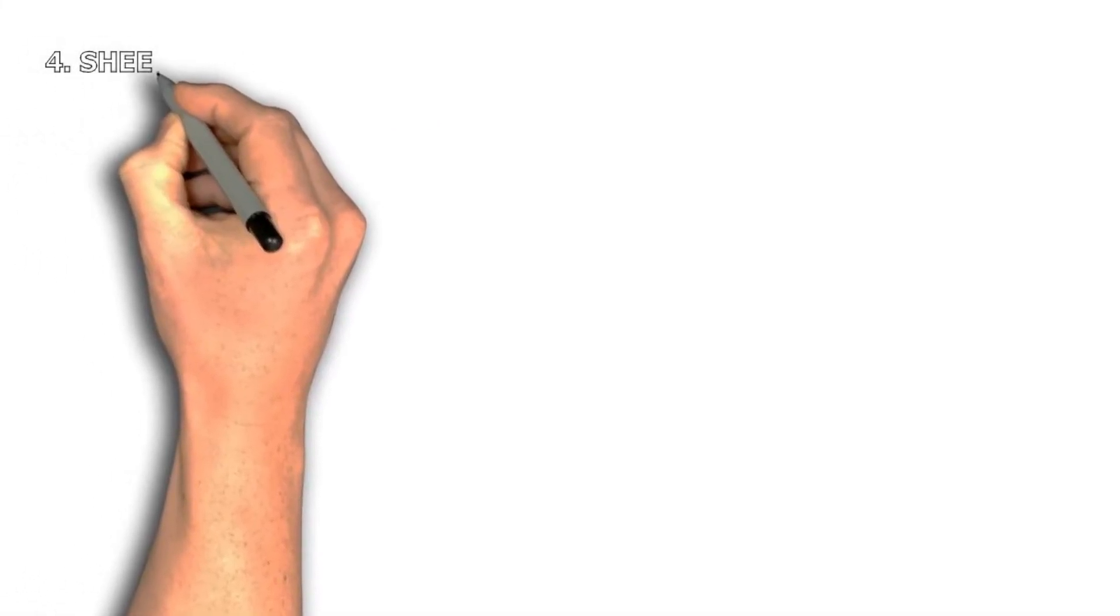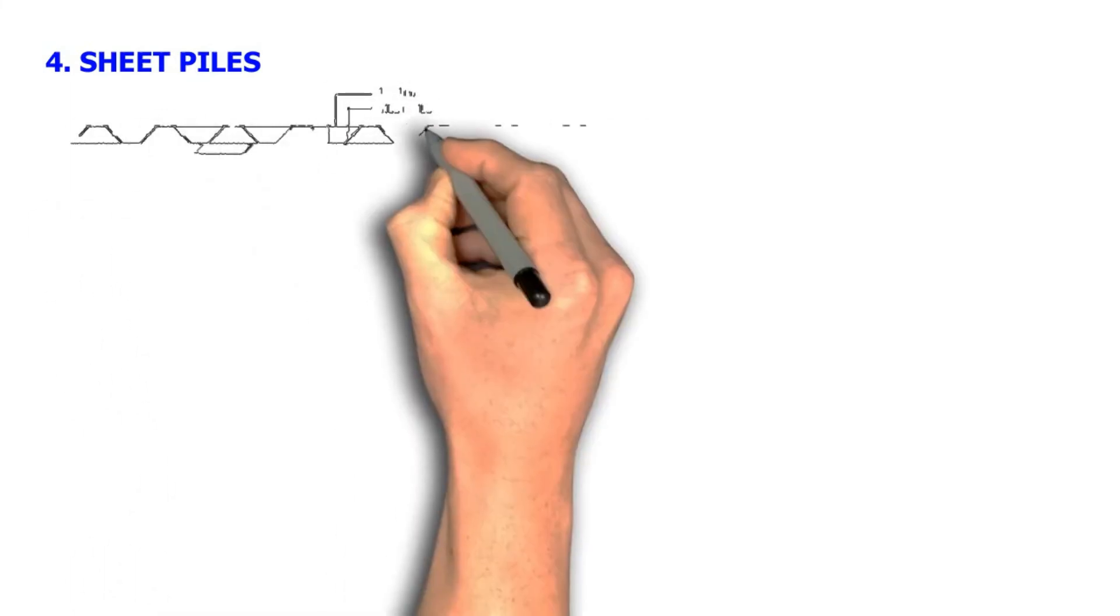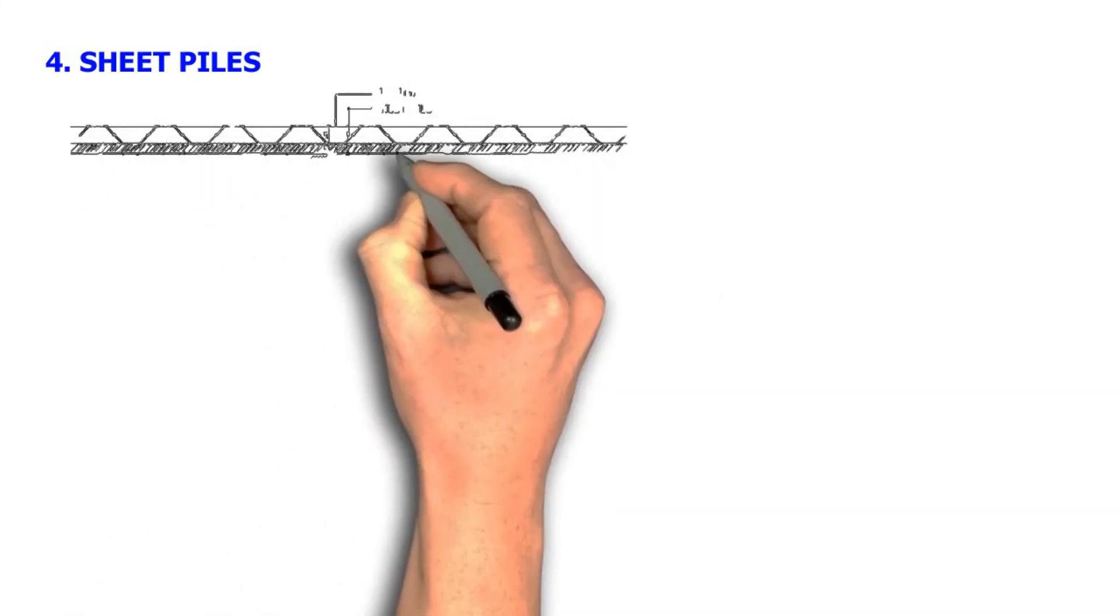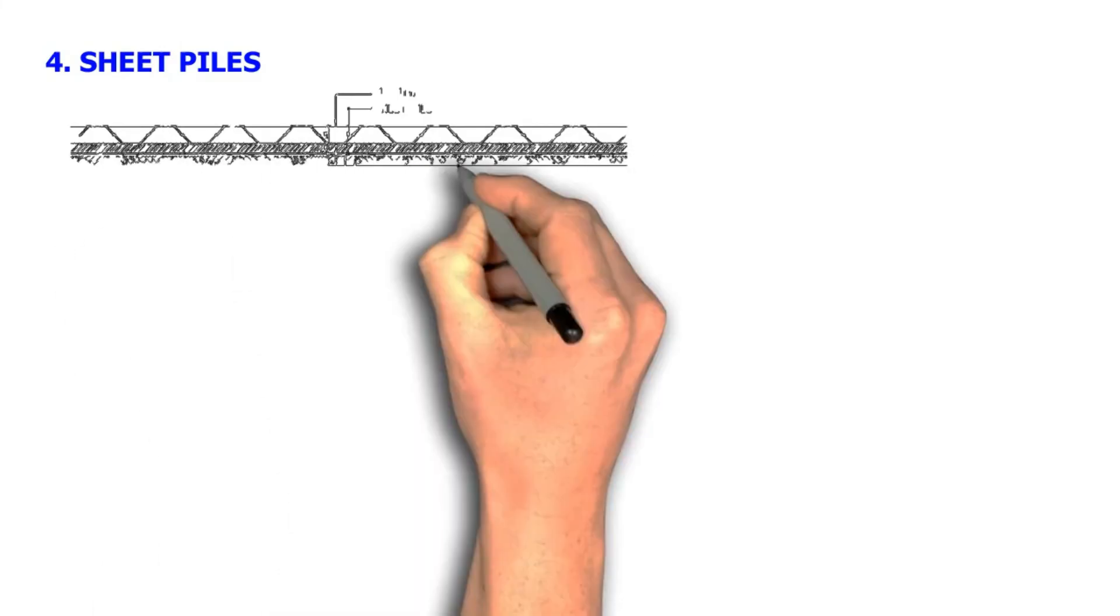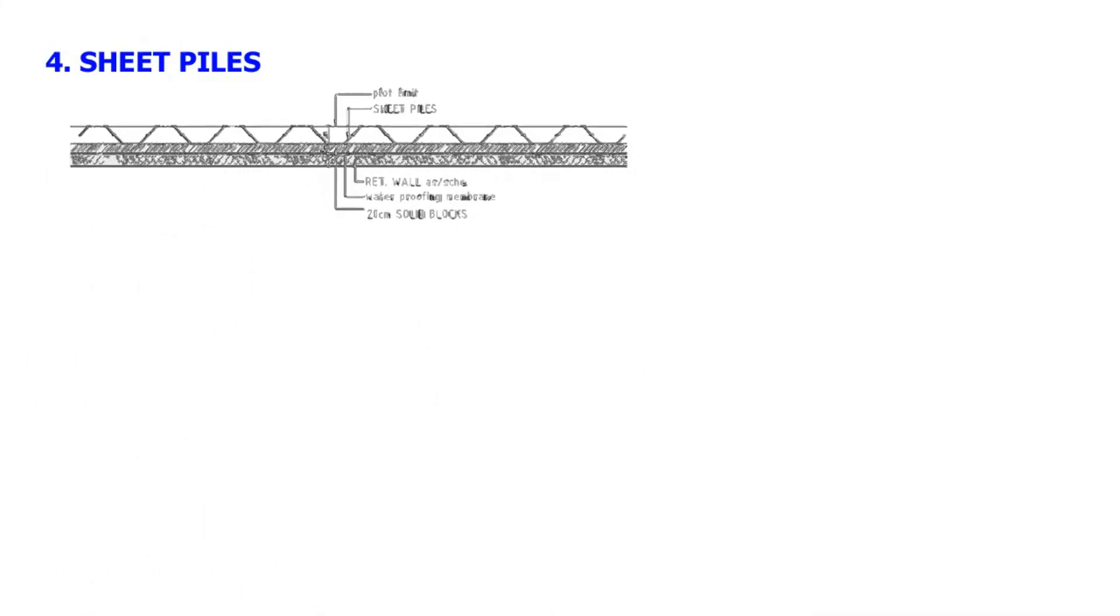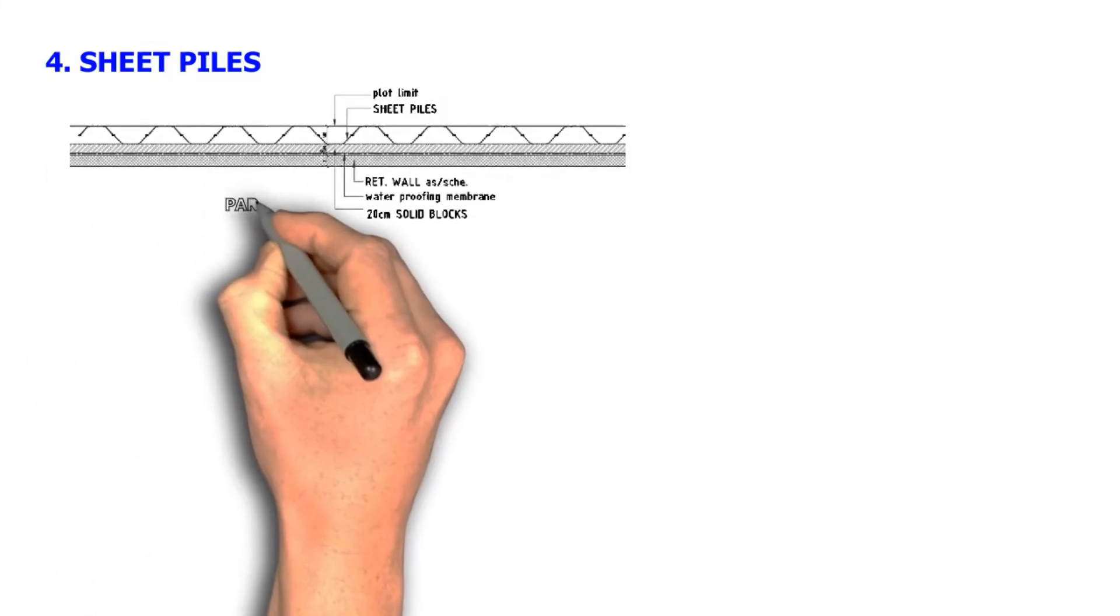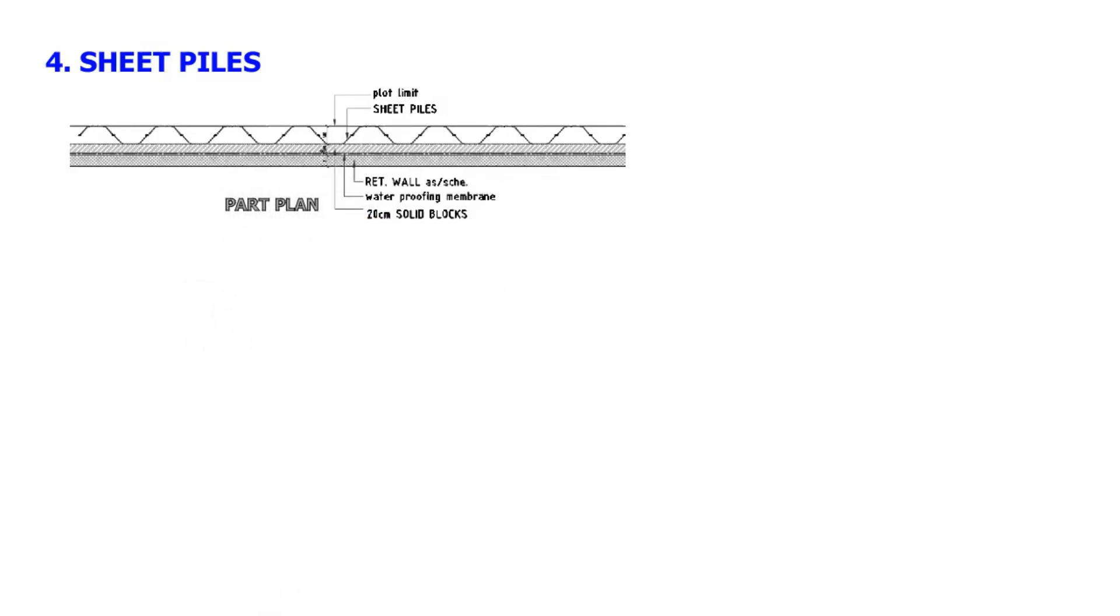Number 4, Sheet piles. Although they can be used to retain soil in excavations, this type of shoring is best to use when we need to isolate our excavation from bodies of water, specifically a creek, a pond, or on a seaside. It is commonly seen in port and harbor construction.